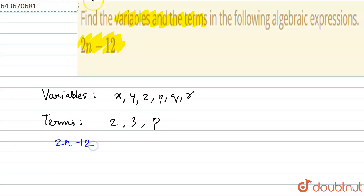So number of variables will be - number of variables is equal to, you can see here there is only one variable, that is n. So it is equal to 1.